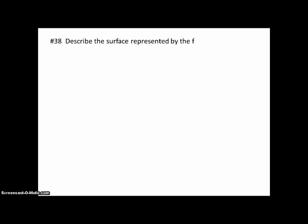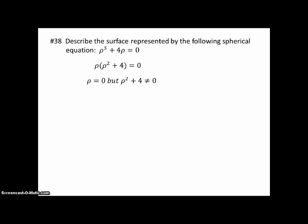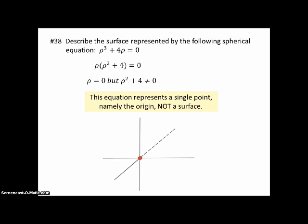Number 38. Describe the surface represented by the following spherical equation, rho cubed plus 4 rho equals 0. So we can factor out a rho, and then we have rho equals 0, and rho squared plus 4 equals 0, but it can't be 0. So the only solution is that we have a radius of 0. And this equation then represents a single point, namely the origin. It's not a surface. Remember, we said a long time ago that you weren't guaranteed a surface. It could be a subset of a surface. And there's a picture of our lonely point at the origin.